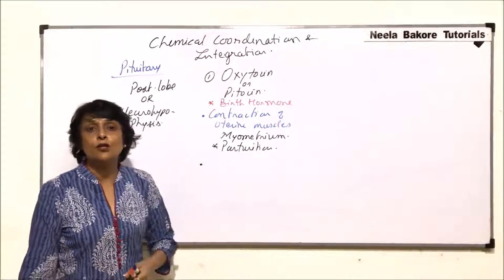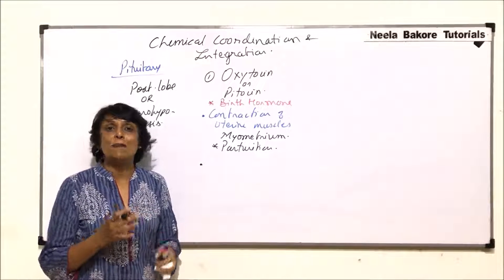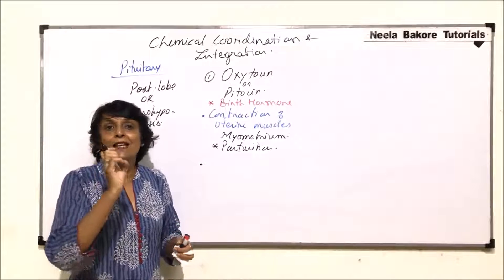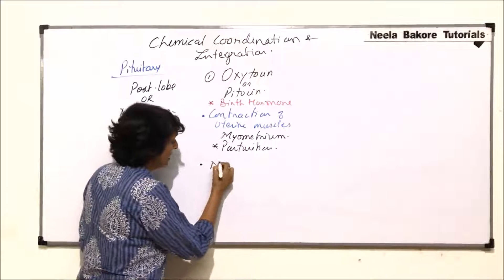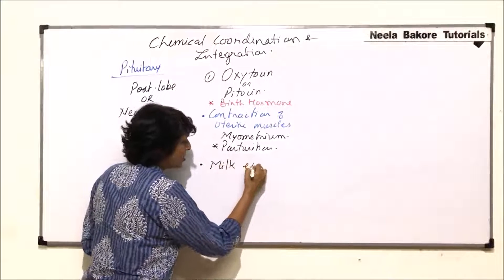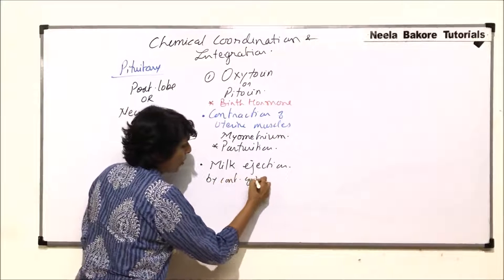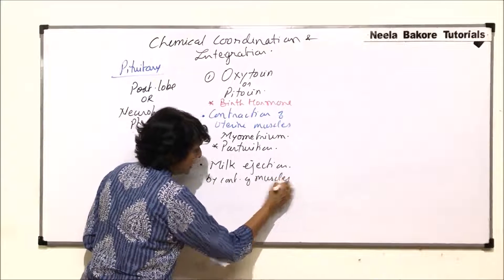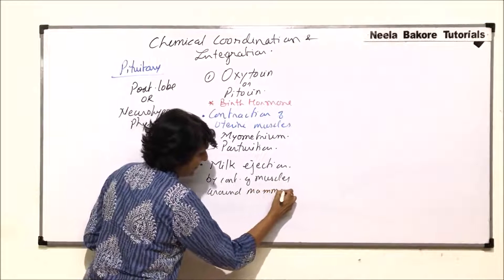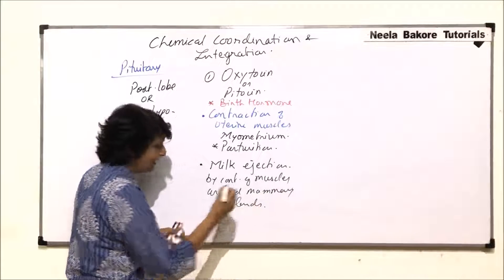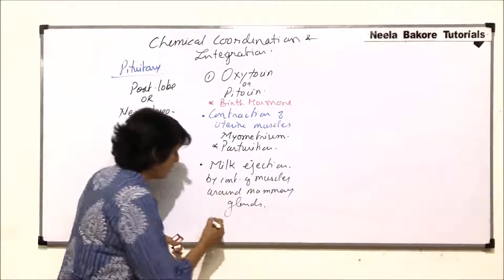One more function performed by oxytocin is it helps in contraction of the muscles around the alveoli of mammary glands, so that the mammary glands get squeezed and milk ejection takes place. It helps in milk ejection by contraction of muscles around mammary glands, and this ejection of milk is known as galactogogic effect.